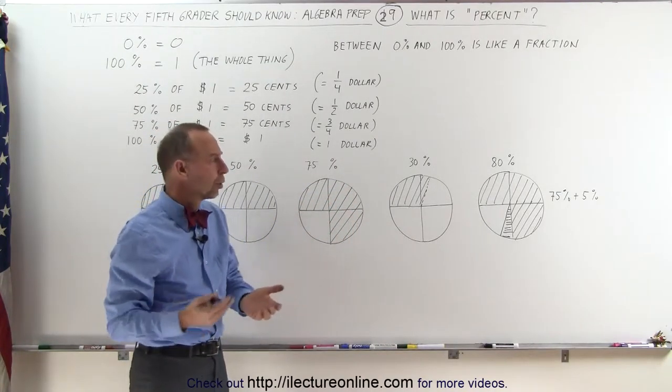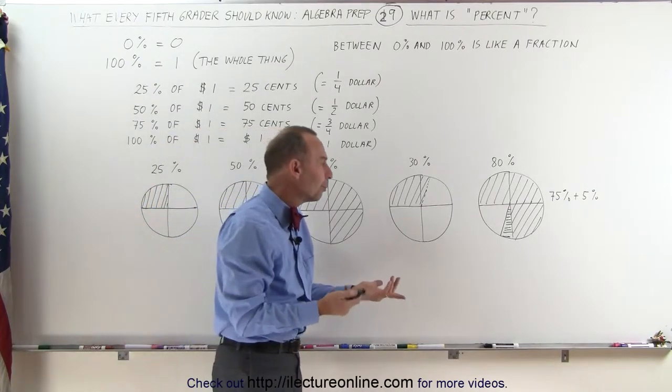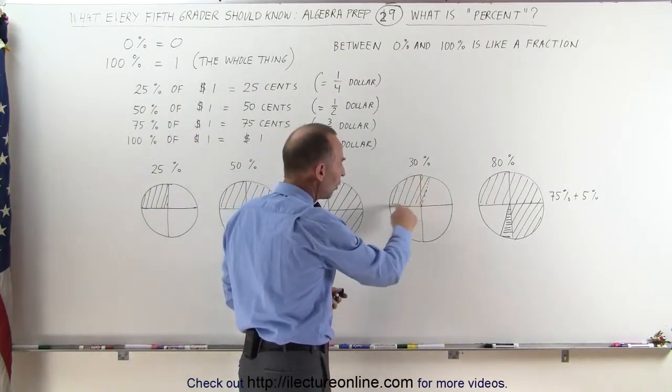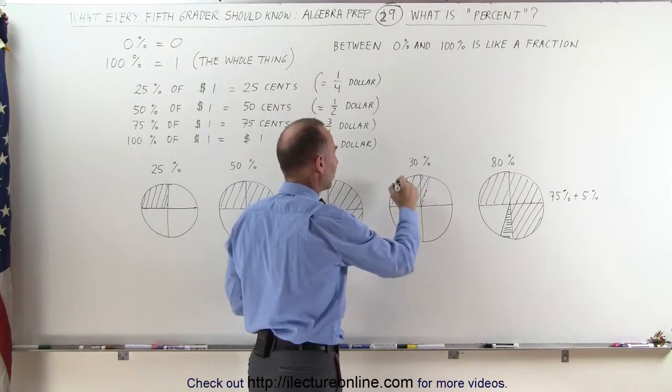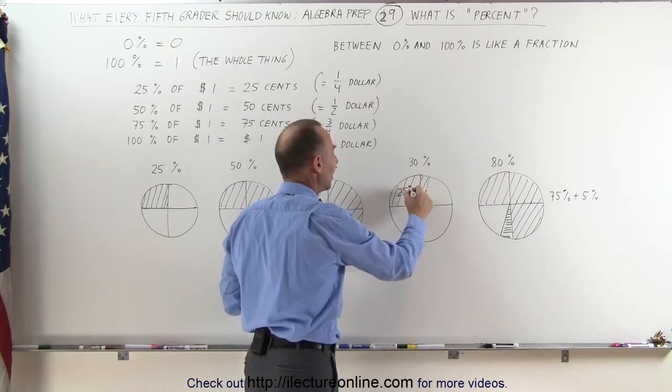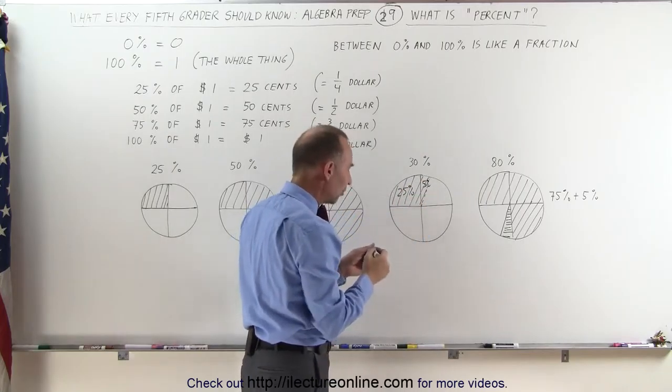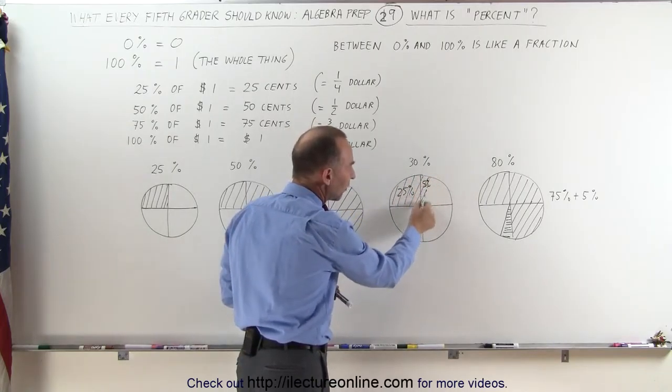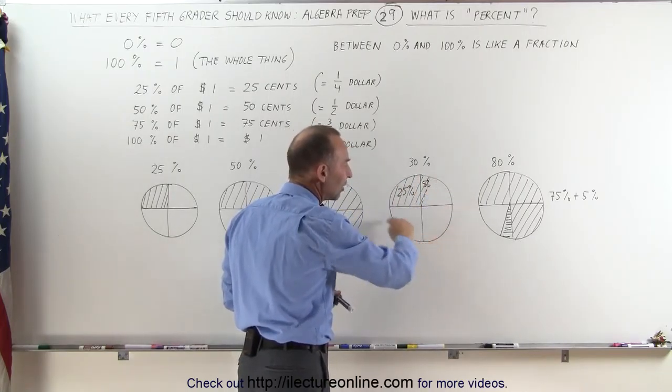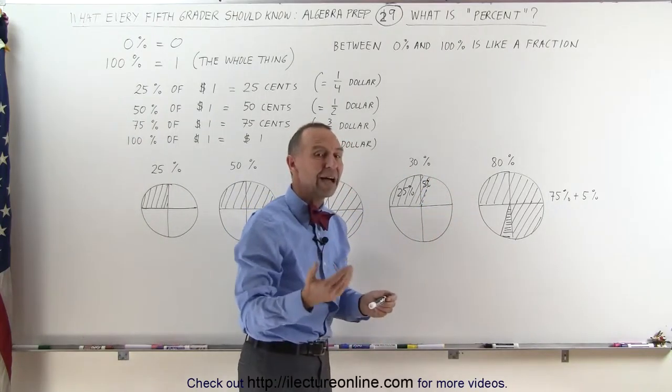But what do we have something like 30% or 80%? Well, this quarter means I have 25%. So this means 25%. And if I add up another 5% to that, I now have 30%, which means this sliver here represents 5% of the whole thing or 5 out of 100.